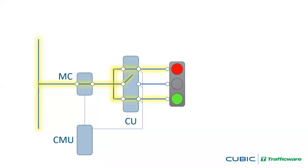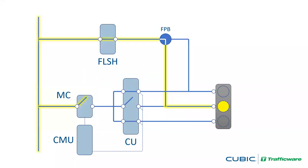When everything operates normally, the monitor keeps the main contactor switch closed and power flows to the signal head. When something goes wrong, the monitor senses it and within tenths of a second can open that main contactor switch and kill power to the signal head, making the improper indication go away. But that leaves us with a dark signal head. So we add another route for power — a flashing bus — which is a fail-safe bus that when the monitor detects something wrong, takes over so we don't have a dark signal indication.